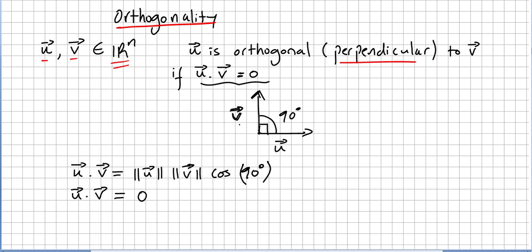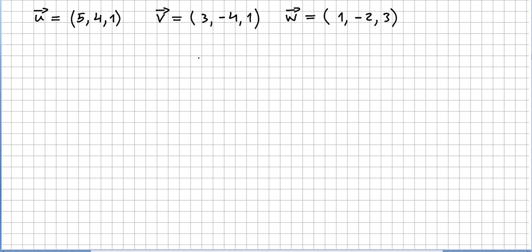Let's pick three vectors: vector u equals (5, 4, 1), vector v equals (3, -4, 1), vector w equals (1, -2, 3), and let us see which of these vectors are perpendicular.